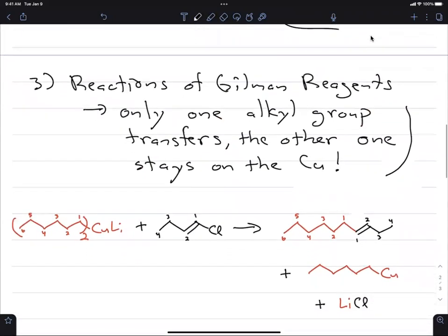So as we generally draw the Gilman reagents reacting, if we have a Gilman reagent, and I've numbered the carbon atoms to keep track of them, we have two of those alkyl groups on the same copper lithium species. And then we react with, in this case, a vinyl halide. We're going to create a new carbon-carbon bond and connect those two together.